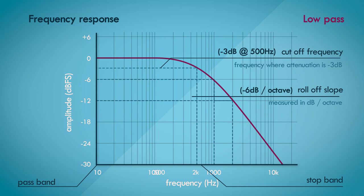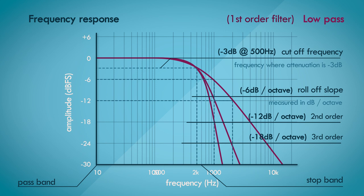This is coincidentally called a first order filter. The order of the filter determines the steepness of the slope. So a second order filter would have a rolloff of negative 12dB per octave. A third order filter would have a rolloff of negative 18dB per octave, and so on. We'll see where this order terminology comes from later on.